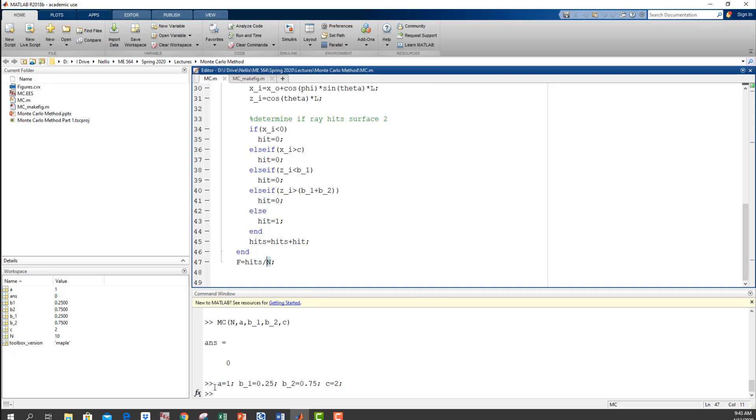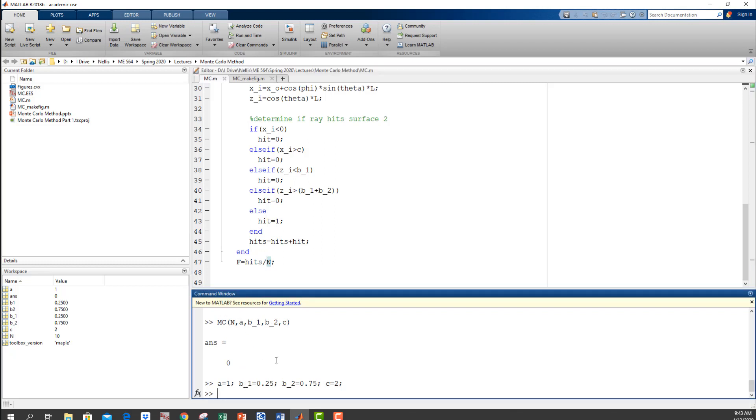So here I just picked a geometry. A equal 1, B1 and B2 and C. And now I'm just going to run this thing. So let's set N to a small number like 10. And I'll run my function. And what you'll see is, so that time my view factor is 0.2, which means that two of my 10 rays hit it. But if I run it again, that time none of my 10 rays hit it. This time three of my 10 rays hit it. So every time I run it, I'm going to get a different answer. And you really have to understand that in order for this to be useful, N can't be 10.